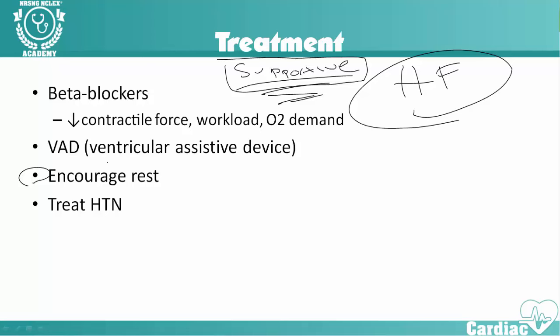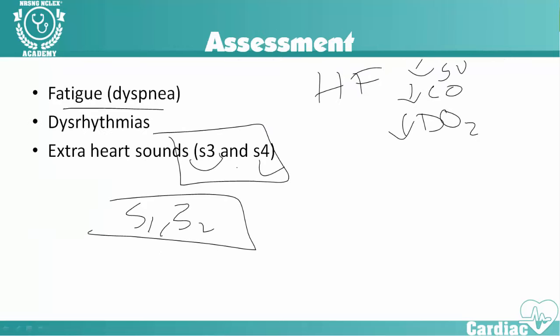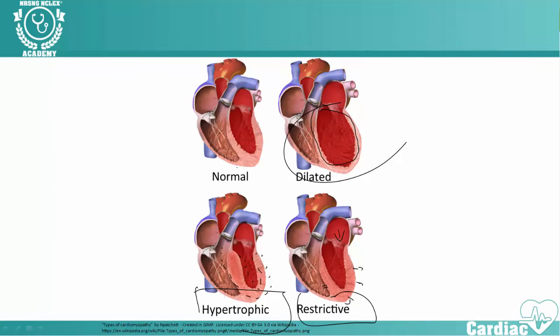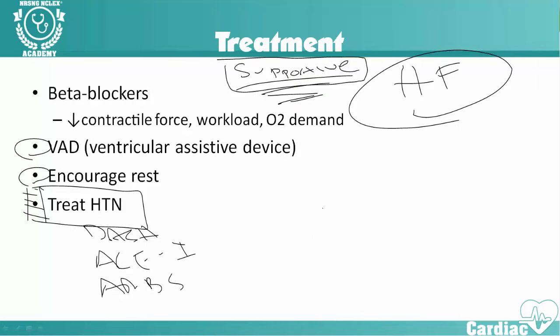We're also going to want to encourage rest for our patients. These patients are going to be very fatigued and have dyspnea due to decreased output, so encouraging rest, scheduling activities, and bundling care so they're not exhausted all the time. We're also going to want to treat hypertension, as a lot of these patients will end up with hypertension — we can use the DASH diet, ACE inhibitors, ARBs, etc. One last thing we can do is ventricular assistive devices. They're not a very common treatment, but ventricular assistive devices are going to actually help the ventricles squeeze and help get the blood out of the system.